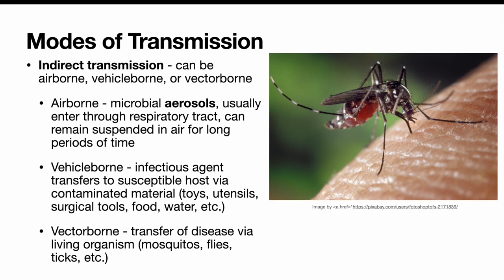Vehicle-borne transmission is where the pathogen transfers to a susceptible host by way of a contaminated material — such as children sharing toys at a daycare center, sharing utensils, surgical tools, food, or water. And then there's vector-borne transmission — disease transfer from one living organism to another, such as via a fly, mosquito, or tick.